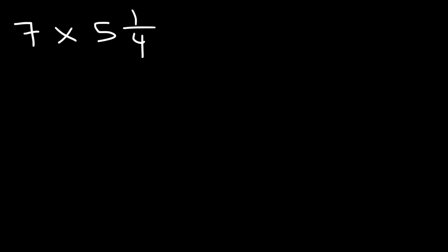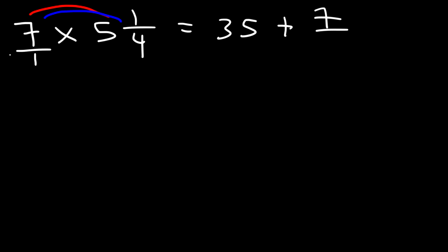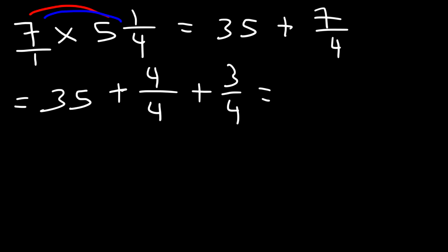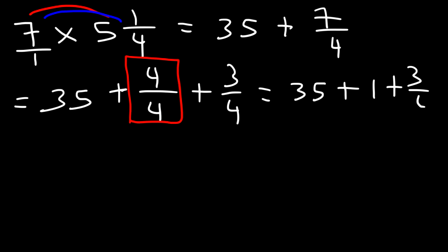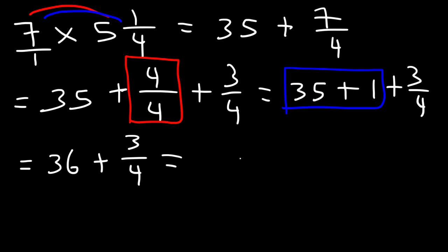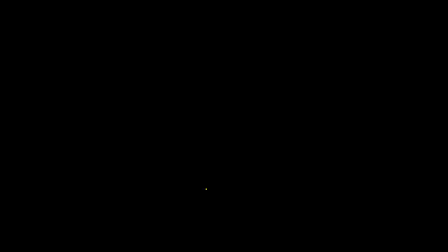Third example: 7 times 5 and one-fourth. Directly multiply: 7 times 5 is 35, and 7 times one-fourth is 7 over 1 times 1 over 4, which gives 7 over 4. Write 7 over 4 as 4 over 4 plus 3 over 4. 4 divided by 4 is 1, so we have 35 plus 1 plus three-fourths. Combining 35 and 1 gives 36 and three-fourths.